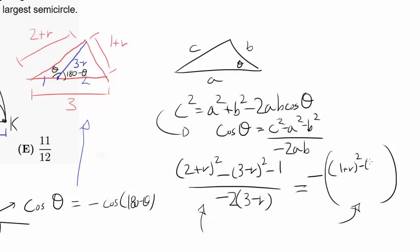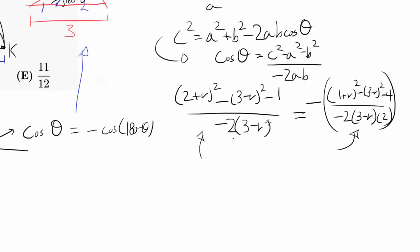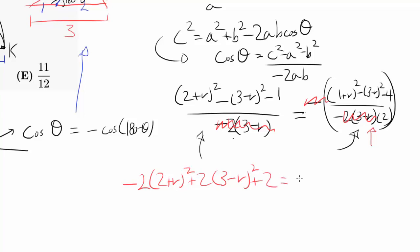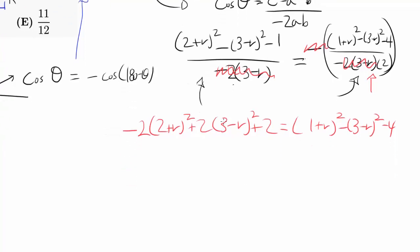Cosine of theta from the first triangle is: (2+R)² minus (3−R)² minus 1², all over negative 2 times (3−R) times 1. For the other triangle, cosine of 180 minus theta — which equals negative cosine theta — is: (1+R)² minus (3−R)² minus 2², all over negative 2 times (3−R) times 2. Let's multiply both sides by 2 times (3−R) and by a negative sign to clear denominators.